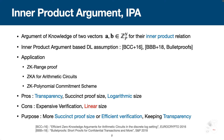The cons of Inner Product Argument is expensive verification of linear size. Our purpose of this work is to achieve more succinct proof size or efficient verification in Inner Product Argument, while keeping transparency.